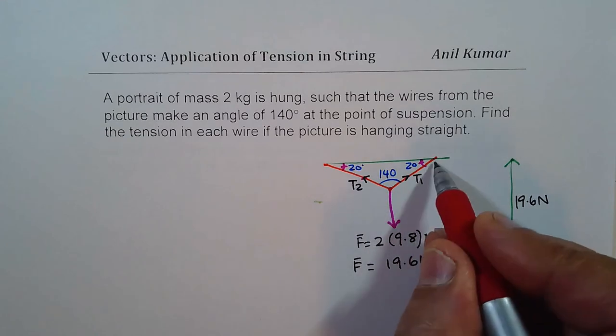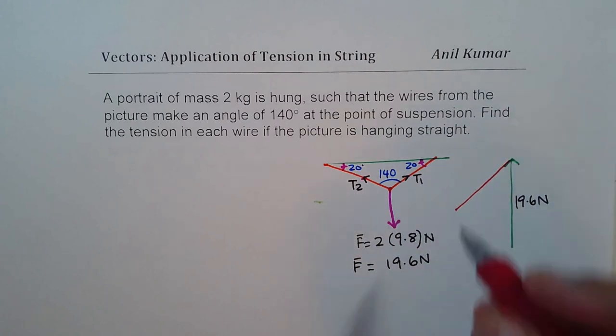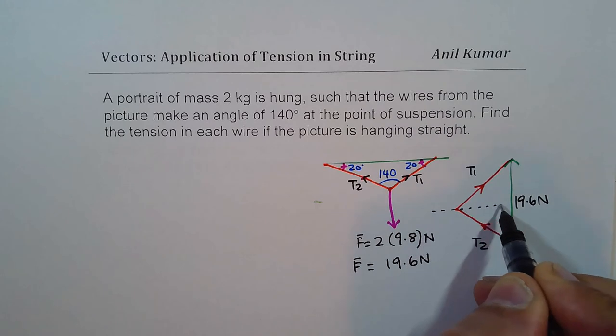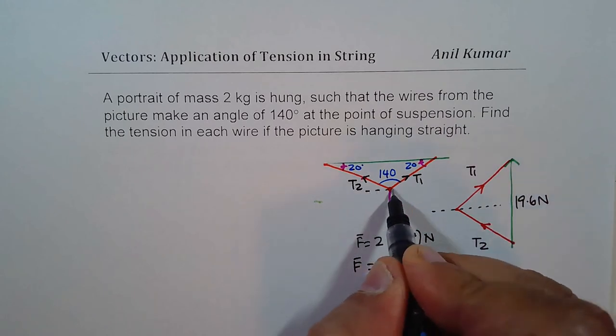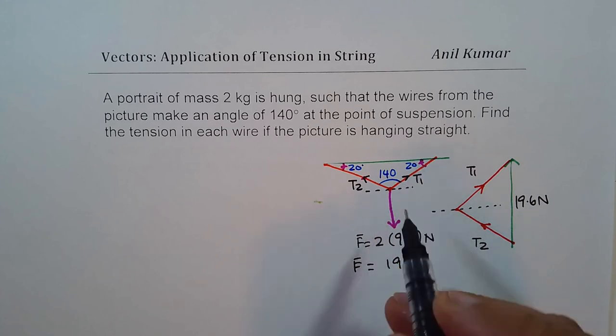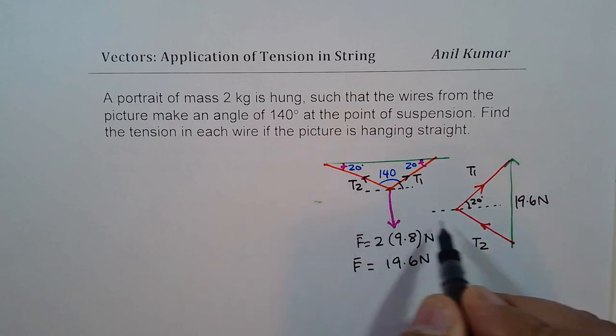Now, direction along this tension will be kind of like this. So this is T1. And T2 is right there. So the angle will be, let me draw a dotted line here. So if I draw a dotted line here, this angle is going to be same as 20. So that is 20 degrees. Similarly, this angle is also 20 degrees.